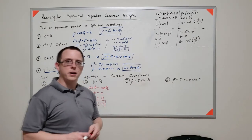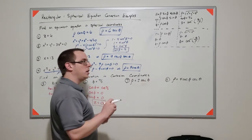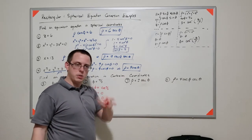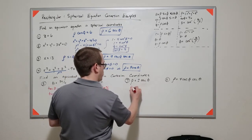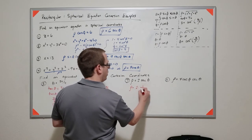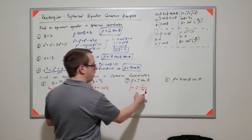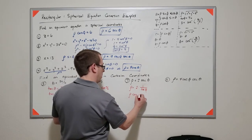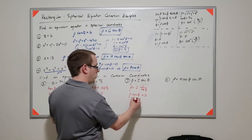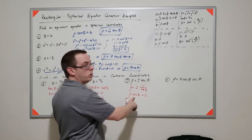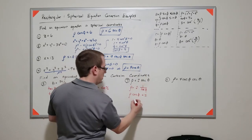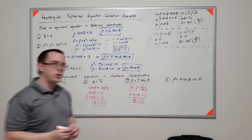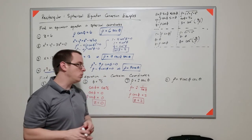For ρ equals 2 secant φ: remember that secant is the reciprocal of cosine, so this says ρ equals 2 divided by cosine φ. Multiplying both sides by cosine φ gives ρ cosine φ equals 2. Since ρ cosine φ is z, this is simply the plane z equals 2.